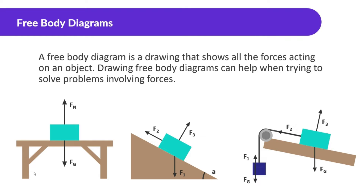A free body diagram is a drawing that shows all the forces acting on an object. Drawing free body diagrams can help when trying to solve problems involving forces. For example, let's look at a box on a table. In the free body diagram we see two forces: a force of gravity pulling it down, and a normal force — the table holding it up. It's not moving because both forces are canceling each other out.